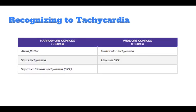Pediatric tachyarrhythmias are first divided into narrow complex or wide complex tachycardia. Measure the QRS complex on a standard ECG to assess its width. A narrow QRS complex is less than 0.09 seconds, which could indicate atrial flutter, sinus tachycardia, or supraventricular tachycardia. A wide QRS complex, greater than 0.09 seconds, indicates ventricular tachycardia or unusual SVT.